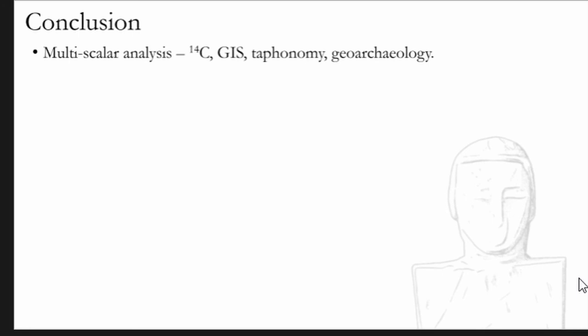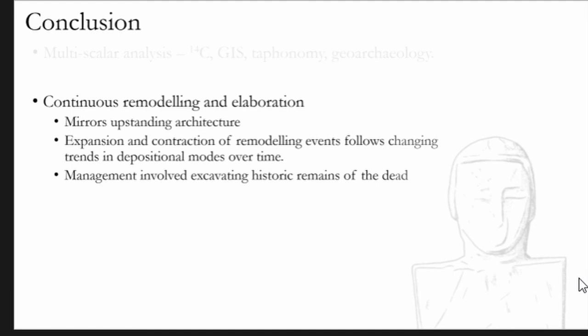So what we've done here is tried to put together a multi-scalar analysis, and I think this is quite important as it allows you to complement a fine-grained understanding of the human remains, which I've been doing through taphonomy, and to contextualize it against the broader picture of what was happening in Neolithic Malta at this time. So the continuous remodeling mirrors what we've seen in the upstanding architecture, for example at Santa Verna temple which is nearby. This expansion and contraction of remodeling follows changing trends in depositional modes over time, as I've just said. But these remodeling events are interventions with the dead themselves—they are literally excavating trenches into the deep deposits of human remains to uproot the megaliths, place them over the highest level, and to keep reusing the center of the site in the same way that they were doing before.